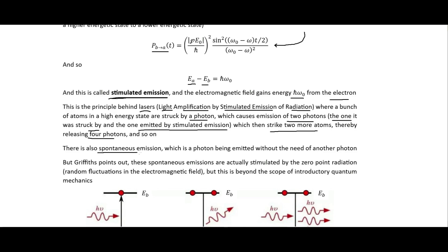We also have spontaneous emission, which is a photon being emitted without the need of another photon hitting the atom. Griffiths points out that these spontaneous emissions are actually stimulated by the zero-point radiation — the random fluctuations in the electromagnetic field. This comes from quantum electrodynamics, which is beyond the scope of introductory quantum mechanics, but it points out that pretty much all emissions are technically stimulated emissions.